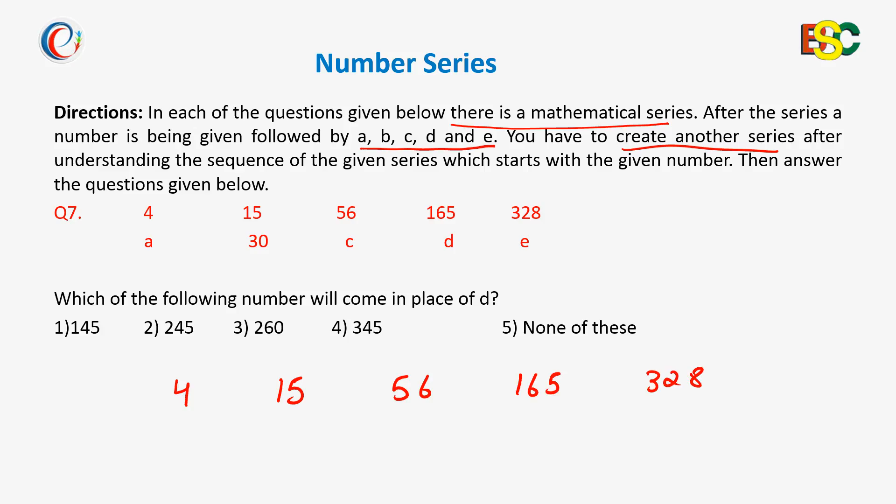So let's find out here 4 is becoming 15. It means 4 into 3 plus 3 or say 4 into 4 minus 1 or say 4 into 5 minus 5. Then from 15 to 56 it is into 5, sorry into 4 minus 4, that is 15 into 4 is 60 minus 4.